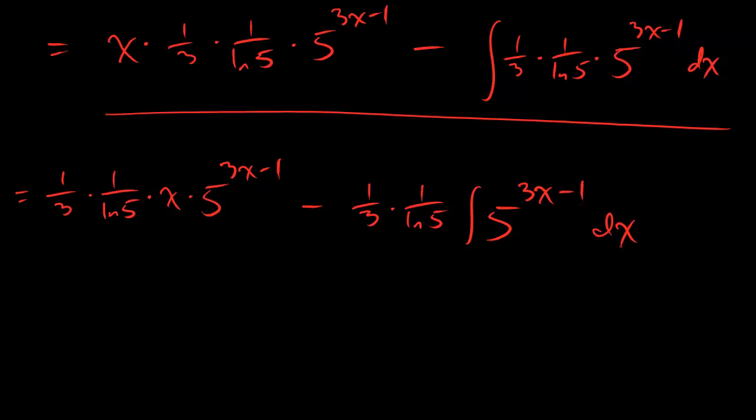All right, so that's what we got, and because we're trying to find the integral of 5 to the 3x minus 1, that again is a u-substitution problem. Now that's the downside, but let me tell you the upside. The upside is that we already figured out what this guy is. We don't have to do it again.